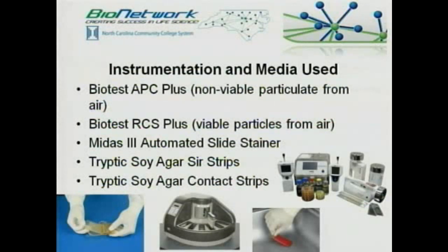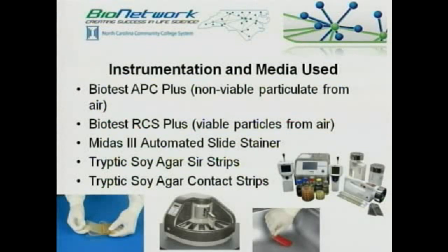Continuing at 1 and 5 micron-sized particles. The Biotest RCS Plus is our centrifugal air sampler, which will sample 1,000 liters of air in 20 minutes. The high-speed RCS Pluses from Biotest Diagnostics can sample that same 1,000 liters—which is, by the way, the required amount the FDA requires you to sample—in just 10 minutes. The MIDAS 3 automated slide stainer has the capability of doing multiple different staining techniques and is programmable to whatever the user desires. The centrifugal air sampler uses a strip made from tryptic soy agar.